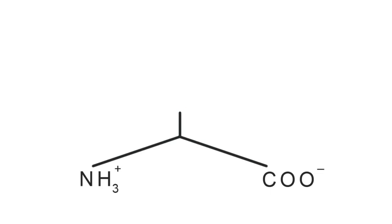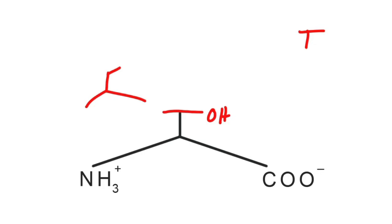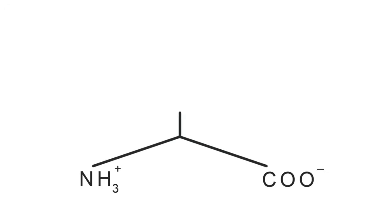Next up is threonine, and its single-letter abbreviation is T. To work T in, we just turn our backbone into a T shape, and we have our hydroxy group. Or you can think of it as a serine with an extra methyl group attached. Either way, just remember that threonine has an alcohol attached.